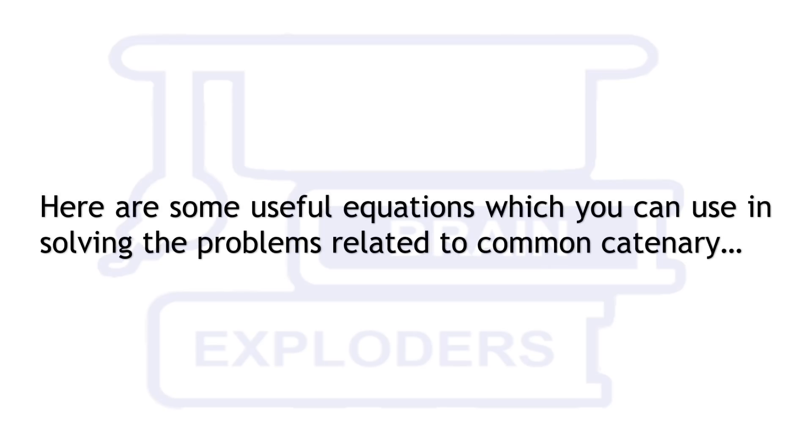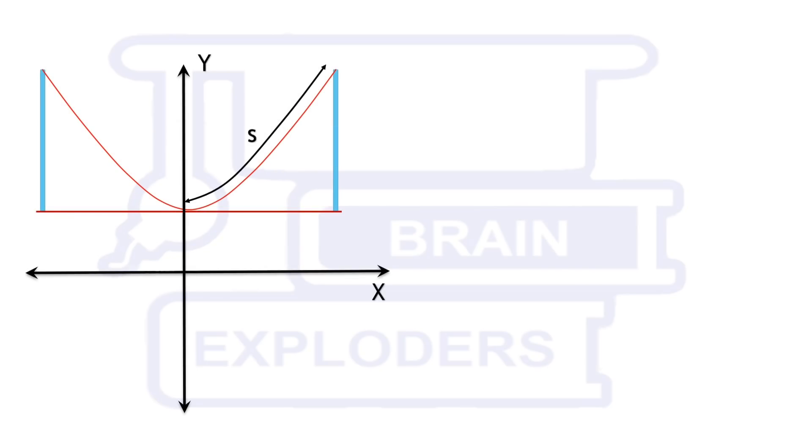Here are some useful equations which you can use in solving problems related to common catenary. If weight of c meters of rope is equal to horizontal tension in rope then take the origin c meters below the lowest point on common catenary. Now these are 6 useful relations and y square equals s square plus c square can be used in this question.